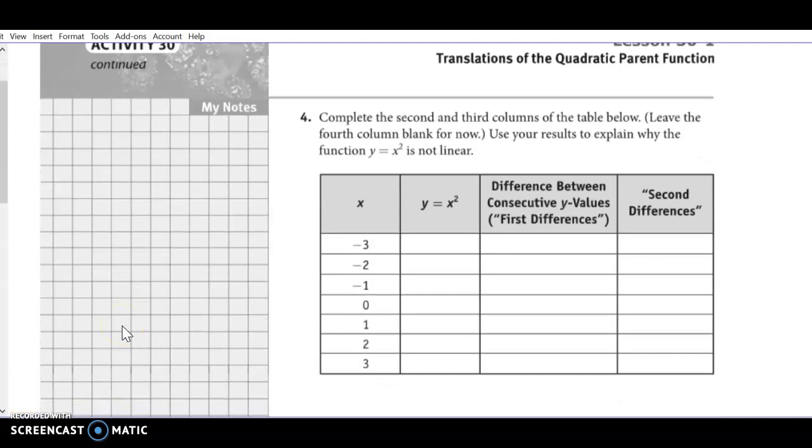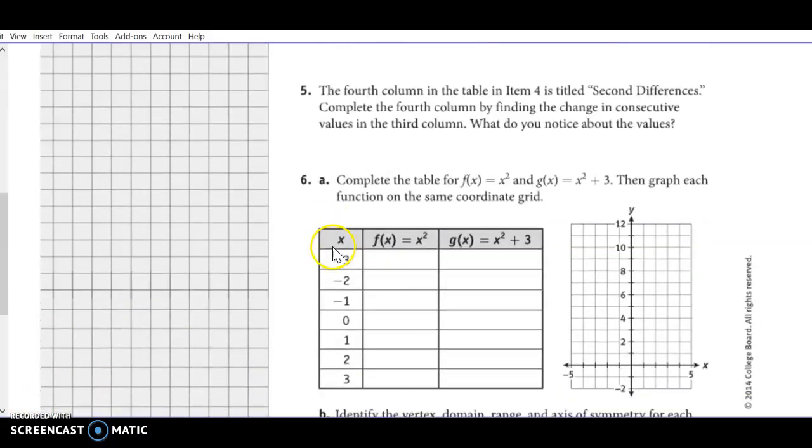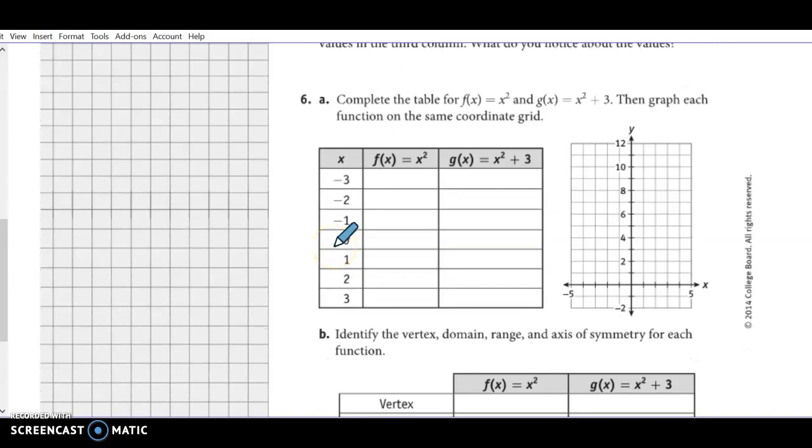And that's just a little quick recap of parent functions. When we look down here at number 6, you can see that now we've added a number to our parent function. So we said that this was 9, 4, 1, 0, 1, 4, 9.